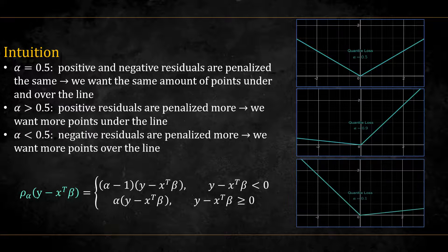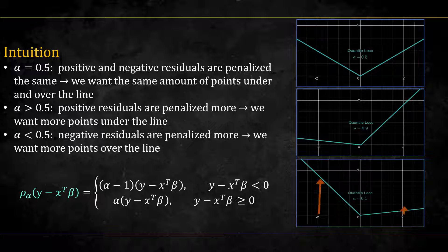When alpha is smaller than 0.5, negative residuals are penalized more than positive ones, so more points will be above the line.